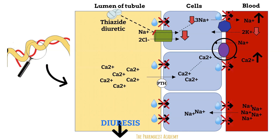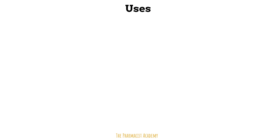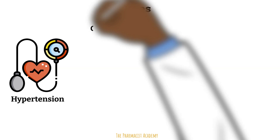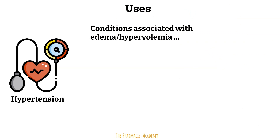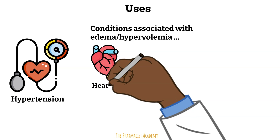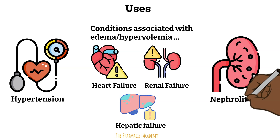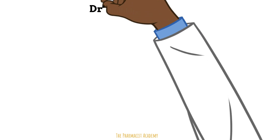Because of these overall effects, these agents are used for the following indications. Hypertension, where they are utilized as first-line agents, alone or in combination with other medications. These agents are also used for conditions associated with edema and fluid overload due to conditions like heart failure, renal failure, and hepatic failure. Nephrolithiasis, or kidney stones — hard deposits of minerals and acidic salts that form in concentrated urine — with calcium being one of the common components. Thiazide diuretics are efficacious due to their ability to move calcium from the renal tubules into the blood.